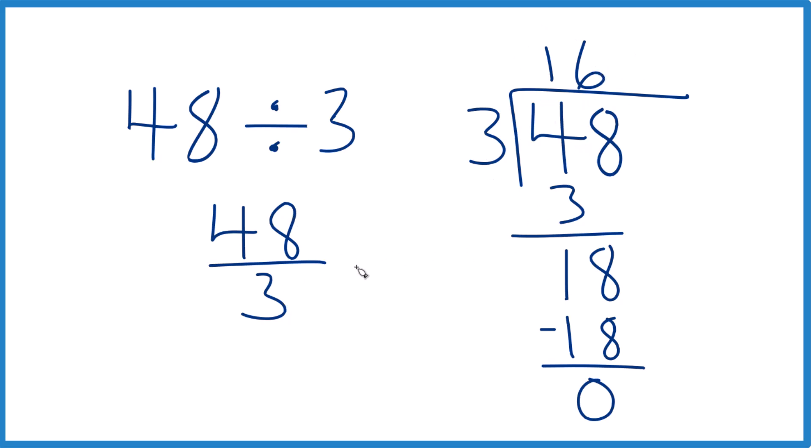So we could say 48 over 3 equals 16, or you could say 48 divided by 3 equals 16. And since multiplication is the reverse of division, 16 times 3, that gives us 48. So you can check your work.